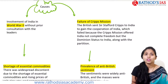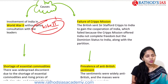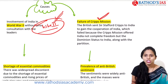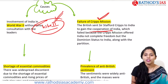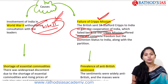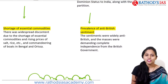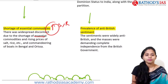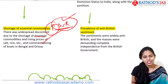The causes for the Quit India Movement include: first, India's involvement in World War II without prior consultation with Indian leaders; second, the failure of the Cripps Mission — the British sent Stafford Cripps to India to gain cooperation, but the mission failed because it offered India dominion status rather than complete freedom; and third, a shortage of essential commodities and widespread discontent due to rising prices of salt, rice, and other goods.